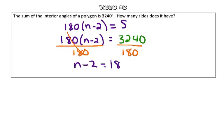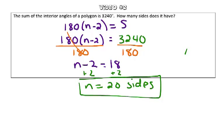To get n by itself, again using inverse operations, we're going to add 2 to both sides, so n equals 20 sides. Nice work!